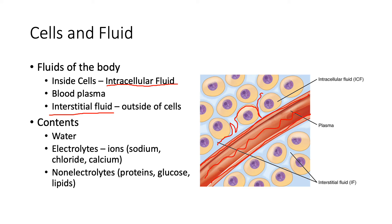Beyond water, we basically have two other things grouped in broad categories: electrolytes and non-electrolytes. You're probably familiar with the term electrolyte from Gatorade commercials. An electrolyte is something that, when in water, dissolves into ions — bonded by ionic bonds. Examples would be sodium ions, calcium ions, and chloride ions.